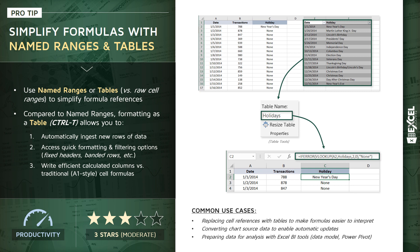A couple of common use cases: number one, replacing raw cell references is a great way to make formulas more readable and easier to interpret. Second, you can convert chart source data to a table or named range to enable automatic updates — instead of sitting a chart on top of a static data range, you can point it to a dynamic table. Last but not least, preparing data for analysis with Excel BI tools like the data model or Power Pivot. Let's jump into the pro tips workbook and see what this looks like in Excel.